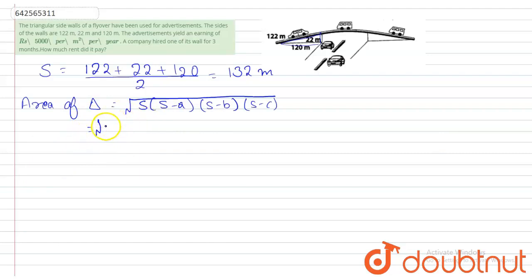this will be 132, then 132 minus 122, 132 minus 22, 132 minus 120.